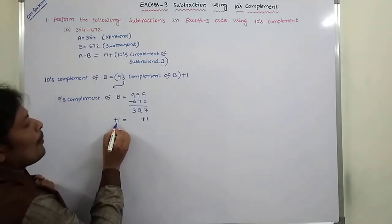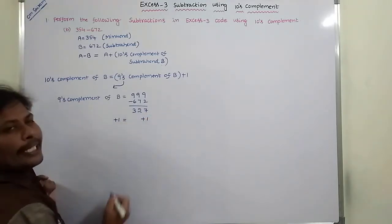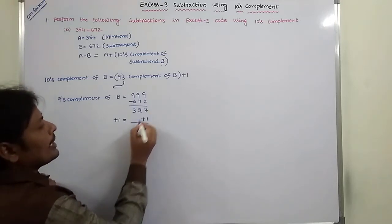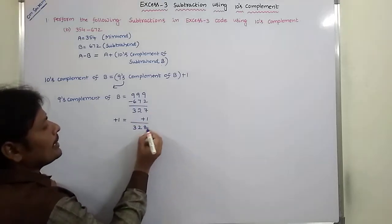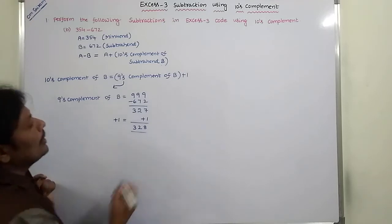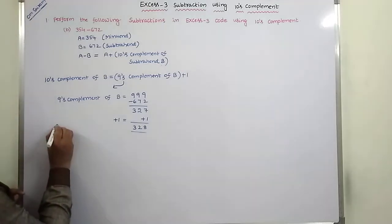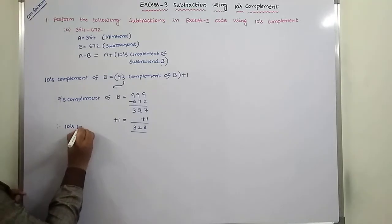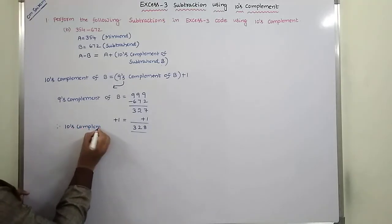The nine's complement of B is 327 plus 1 equals 328. Therefore, the ten's complement of B is 328.